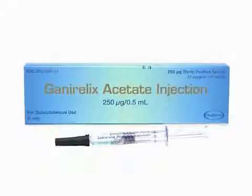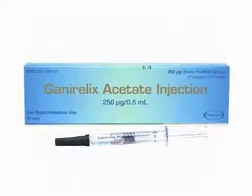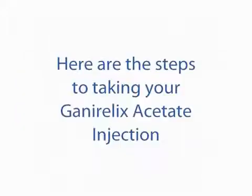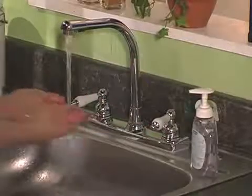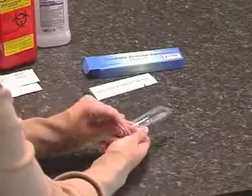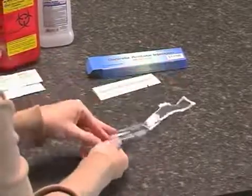In administering Ganirelix acetate injection, follow the steps provided by your health care professional for getting ready, injecting the medication, and discarding used supplies. Because Ganirelix acetate injection is pre-packaged in a sterile, pre-filled syringe, you will not have to prepare the medication — this is done for you. To get ready, wash your hands thoroughly with antibacterial soap and water. Open the sterile package of a pre-filled Ganirelix acetate syringe and place it on the already clean counter within easy reach.